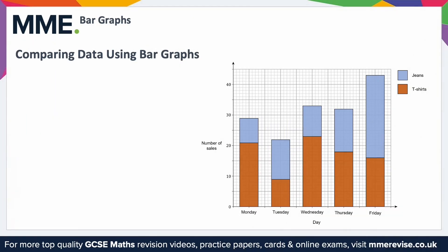Composite bar charts are another way of displaying more than one data set within the same context. Instead of the bars being side by side, they are stacked on top of each other. For example, the bar chart below shows the number of sales at a clothes shop per day for both jeans and t-shirts. You can see which is which using the key.